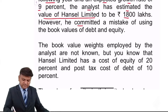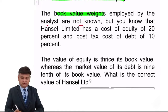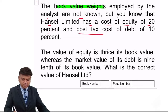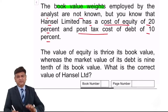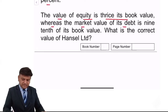However, the analyst committed a mistake of using book value of debt and equity. The book value weights employed by the analyst are not known. But we know that Hansel Ltd has a cost of equity of 20% and post-tax cost of debt of 10%. The value of equity is thrice its book value, whereas the market value of debt is 9/10 of its book value.